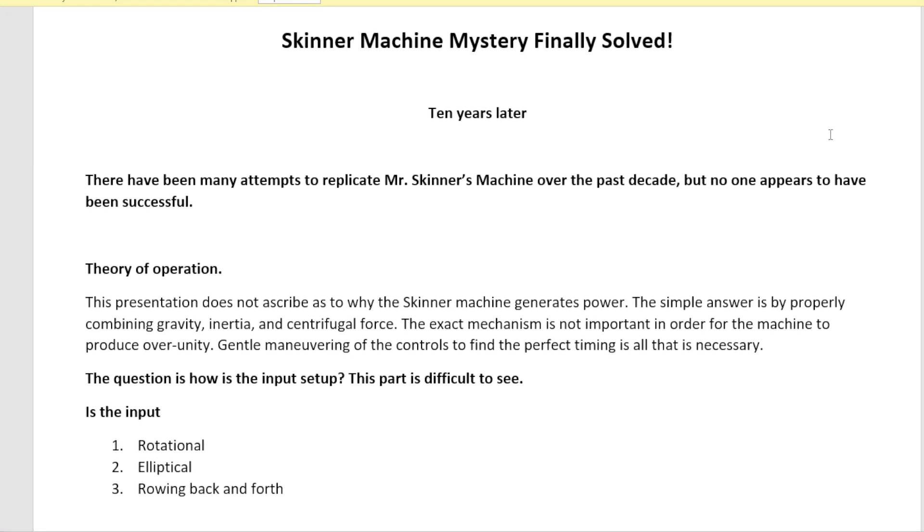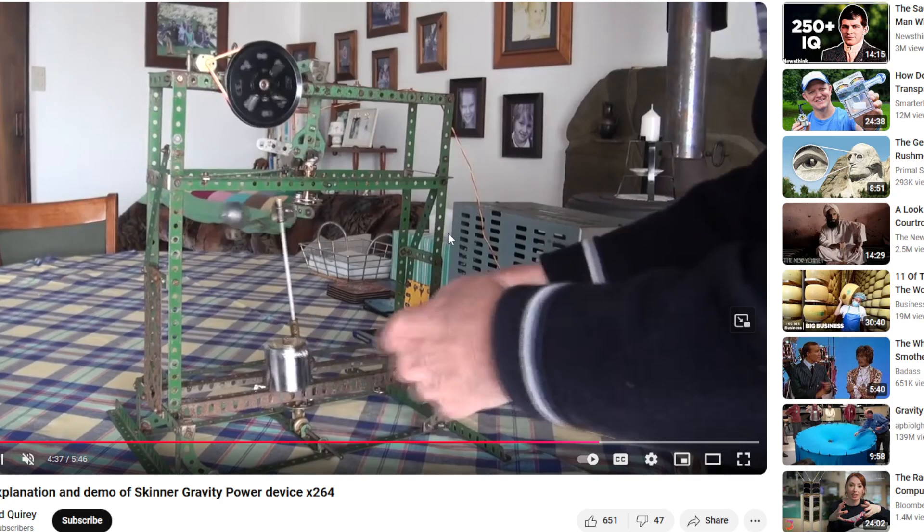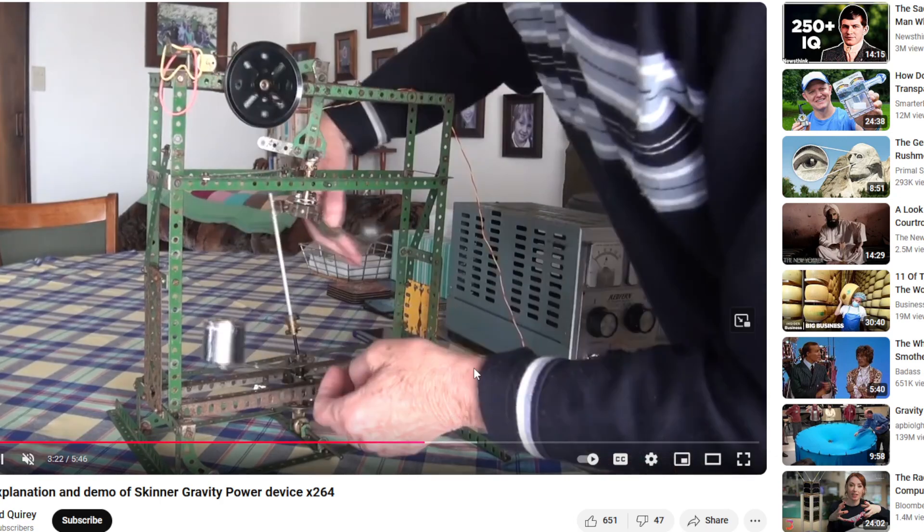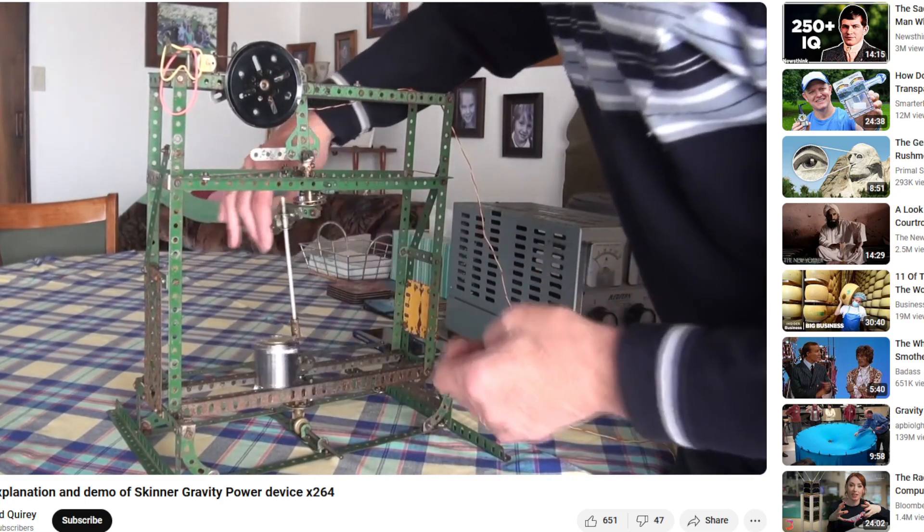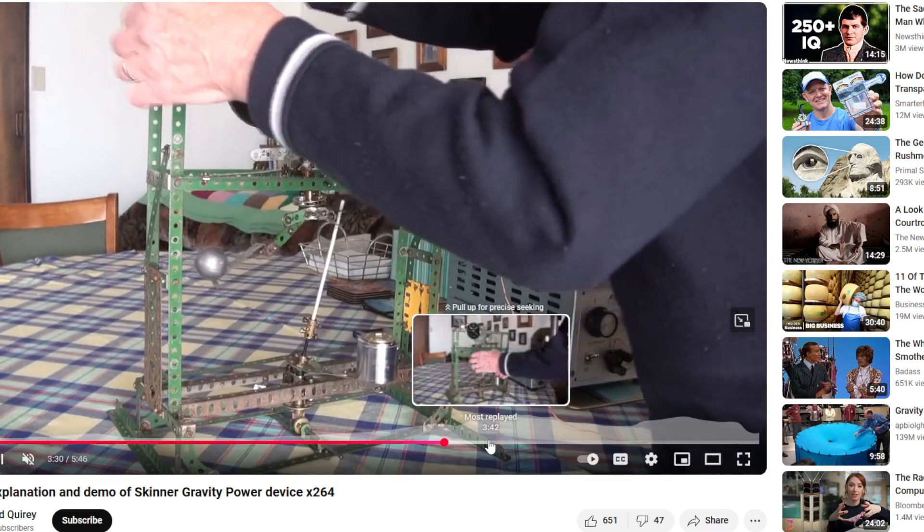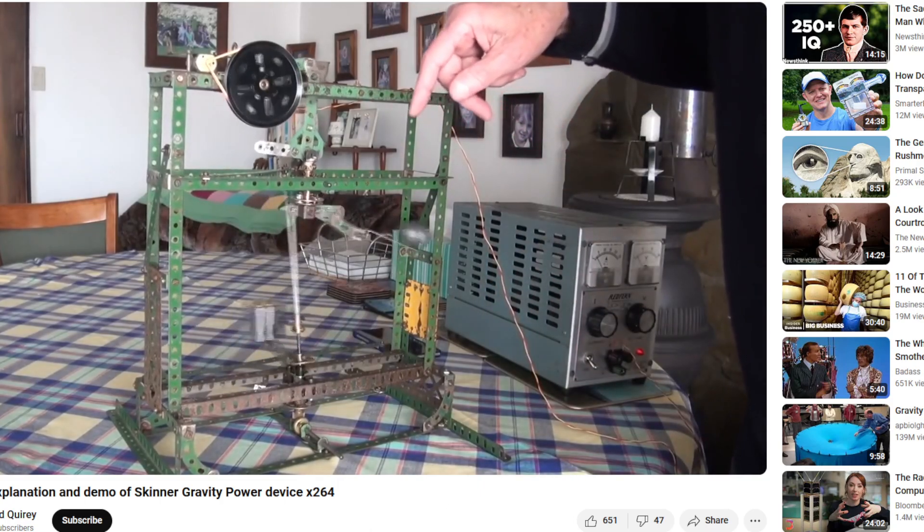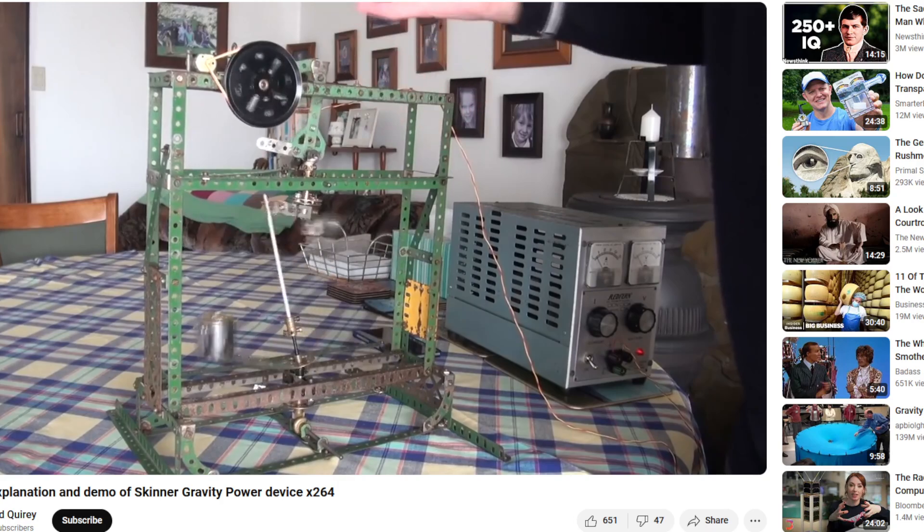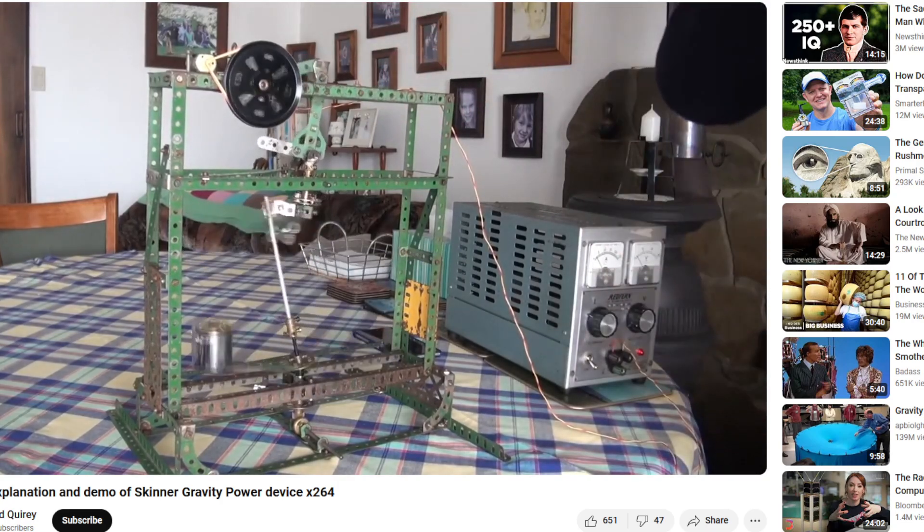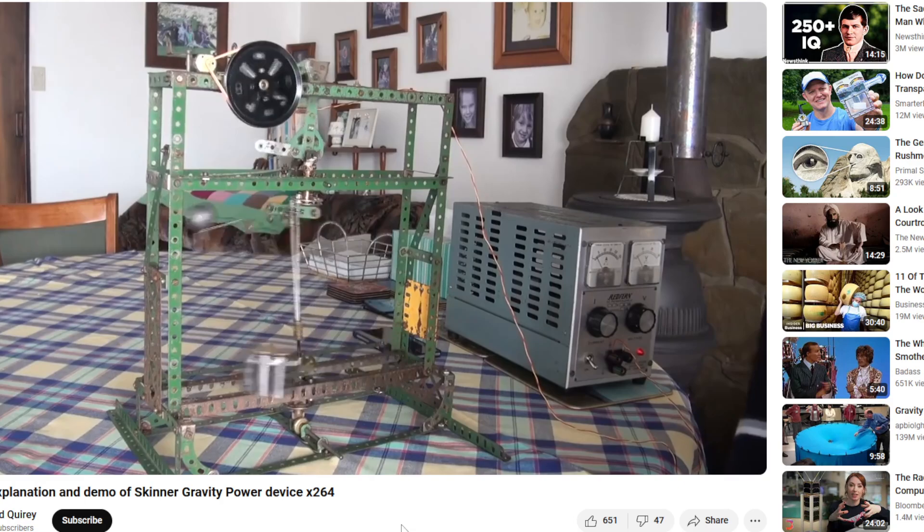We've seen many attempts, but no one was really successful. The most successful we had was this little model from David Query. He's done a lot of work in free energy. You can tell he's highly skilled, much more than yours truly. So he has his rocking back and forth, which is basically the same thing as Skinner's. You can tell it's a bit tricky to get the timing right. He has to have the voltage on the motor just right so it doesn't overrun itself. Everything is freely moving.